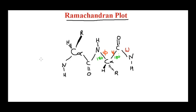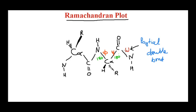What we need to clearly understand here is the peptide bond angle, which we call omega. This peptide bond angle has a partial double bond character, and because of this partial double bond character, this particular bond has no rotation — it cannot rotate. There cannot be a rotation in the peptide bond because of this partial double bond character.